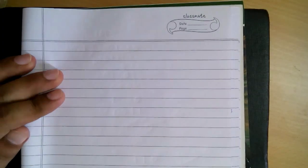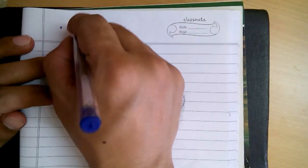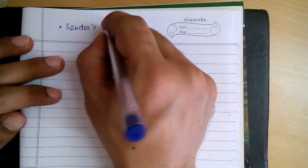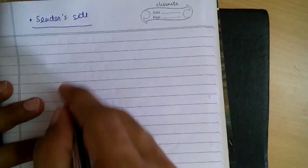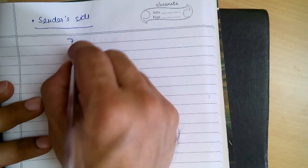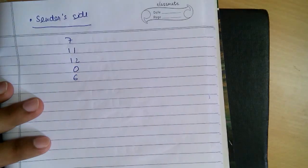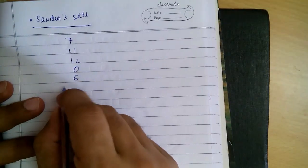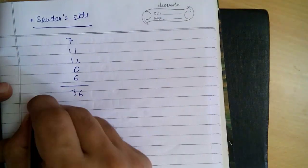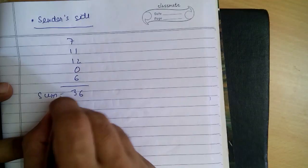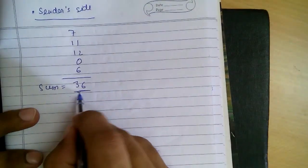Now let's discuss a full example. We are at the sender side. We have these bits: 7, 11, 12, 0, 6. The sum of all this is 36. Sum equals 36.